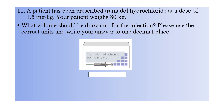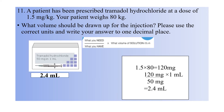Question eleven: a patient has been prescribed tramadol hydrochloride at a dose of 1.5 mg per kg. The patient's weight is 80 kg. What volume should be drawn up for the injection? Write your answer to one decimal place. The answer is 2.4 mL. First calculate the total dose: 1.5 multiplied by 80 equals 120 mg. Then apply the formula: 120 mg divided by 50 mg, multiplied by 1 mL, gives 2.4 mL.